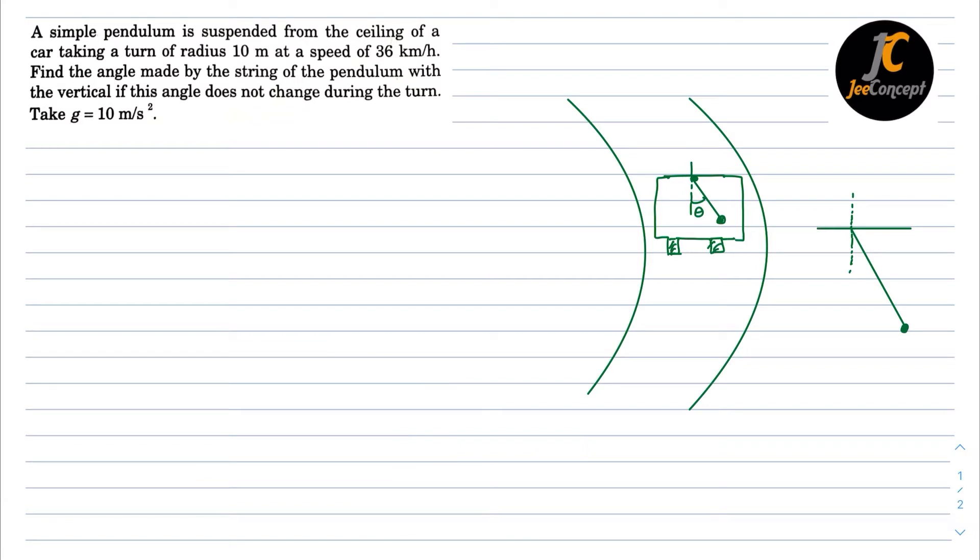So in this particular problem let's say this is a car and it is taking a turn in a curve of radius r. Let's say this is a pendulum and this is attaching at the roof of the car and making an angle theta with the vertical. So I have just replicated this scenario outside the car where this is angle theta and this pendulum is experiencing a force in outward direction due to car moving in a circular path.